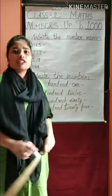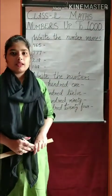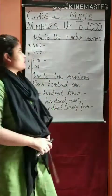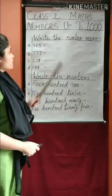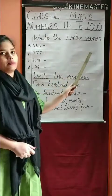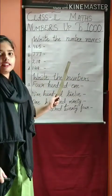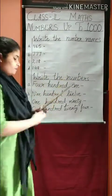Both the chapters are almost the same. The first exercise is write the number names. The number is already given and you have to write its spelling.